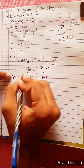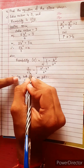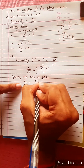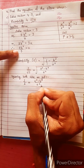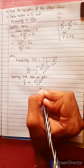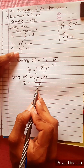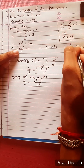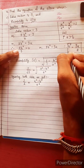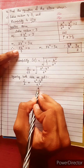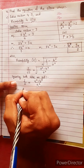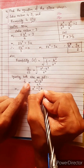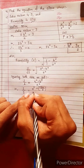Squaring both sides, we get 1 by 2 equals a squared minus b squared divided by a squared. Now substituting b squared equals 3a by 2, we have: 1 by 2 equals a squared minus 3a divided by 2, whole divided by a squared.